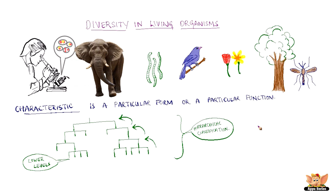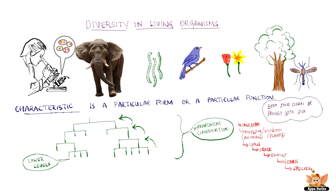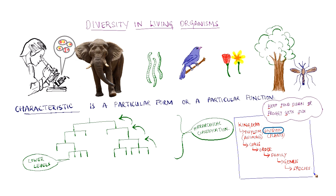We will be using this hierarchical classification henceforth. Organisms are broadly classified into kingdoms. The subgroups under a kingdom are called phylum for animal classification and division for plant classification. The next level is order, then comes family, then genus, and then the lowest level, species.